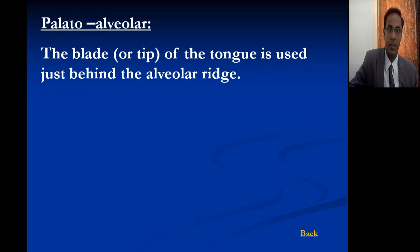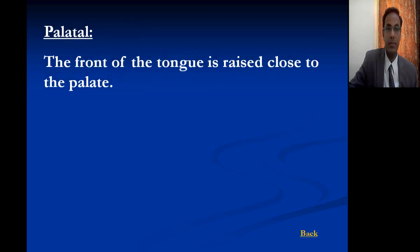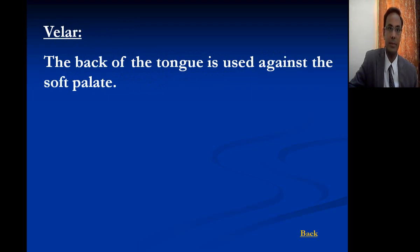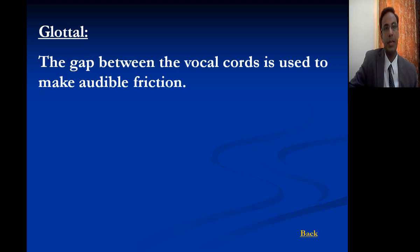Palato-alveolar means the blade or tip of the tongue is used just behind the alveolar ridge. Palatal means the front of the tongue is raised close to the palate. Velar means the back of the tongue is used against the soft palate. Glottal means the gap between the vocal cords is used to make audible friction.